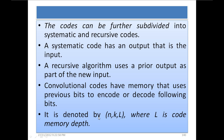The codes can be further subdivided into systematic and recursive codes. Channel coding can be divided into two kinds: systematic and recursive. A systematic code has an output that includes the input — the encoded bits contain the original information bits. A recursive algorithm uses a prior output as part of the new input, and convolutional code is based on a recursive algorithm.